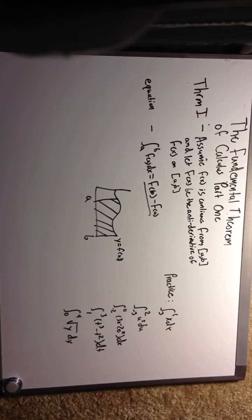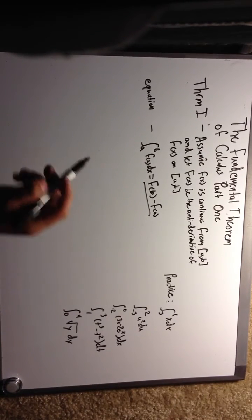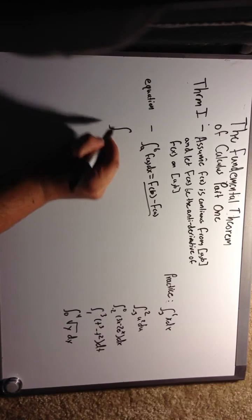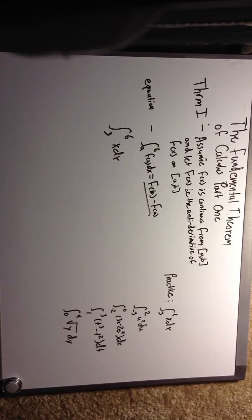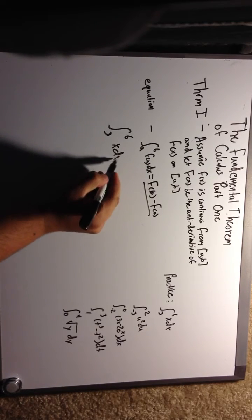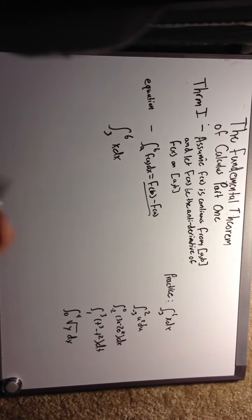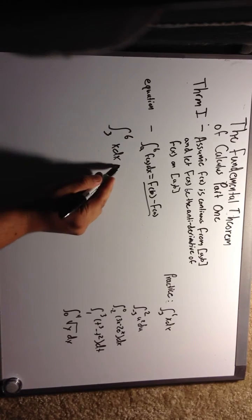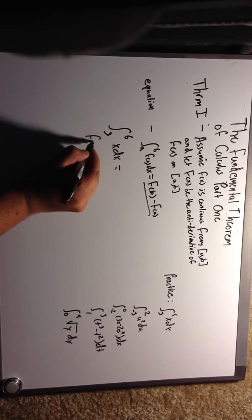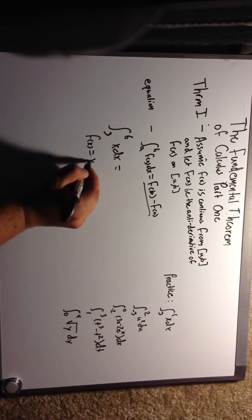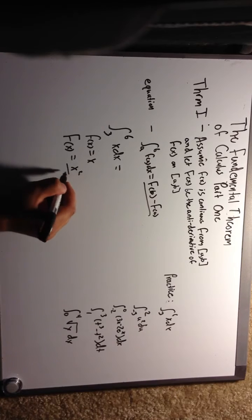I've got a couple of example problems here we can go over. Number one: find the integral from 3 to 6 of x dx. We're going to start off easy. We know that little f of x is equal to x, so if we take the anti-derivative of that, it's going to equal x squared over two.